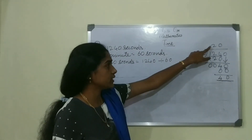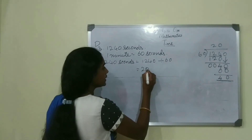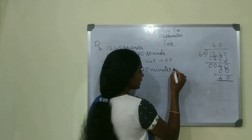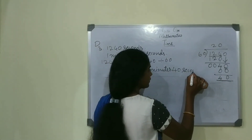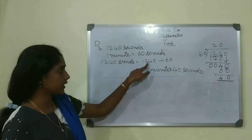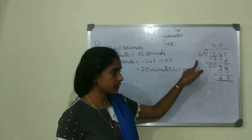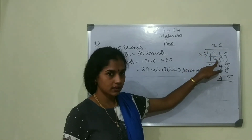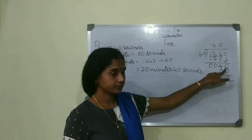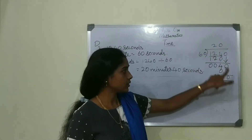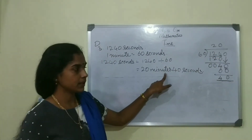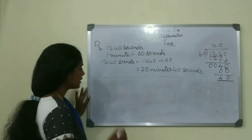The quotient is 20 minutes and the remainder is 40 seconds. So 1,240 divided by 60: 62s are 120, left out is 40, brought next digit 0. 60 zeros are 0, left out with 40. The answer is 20 minutes 40 seconds.